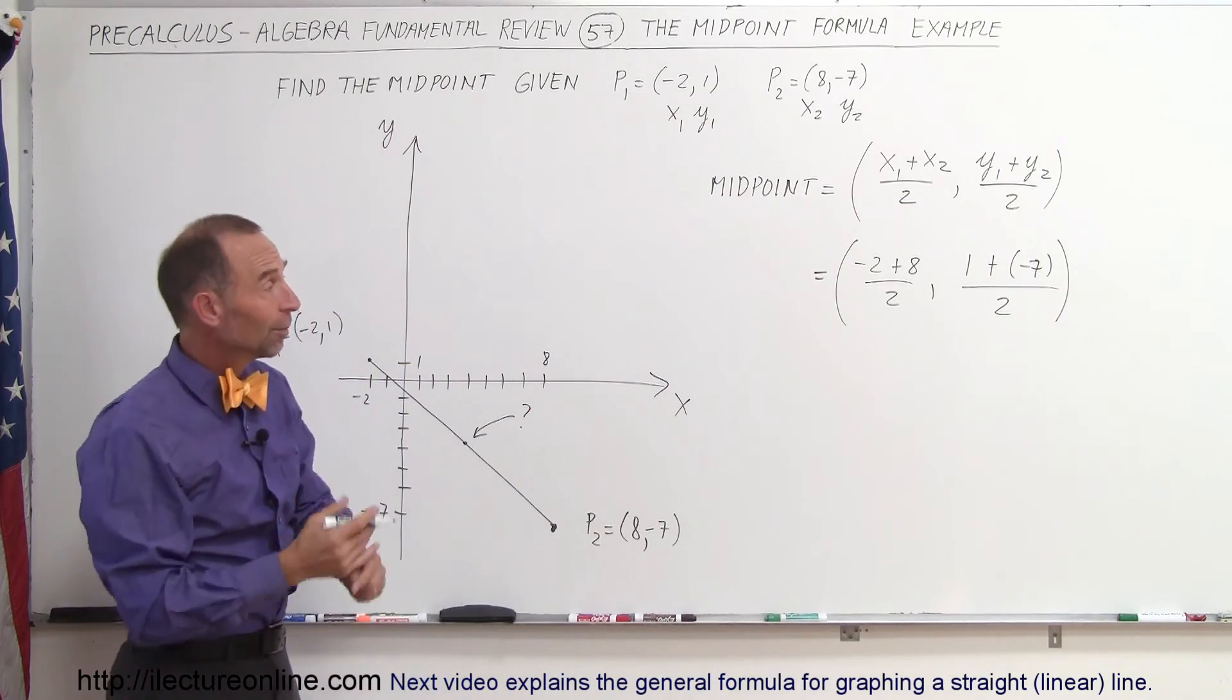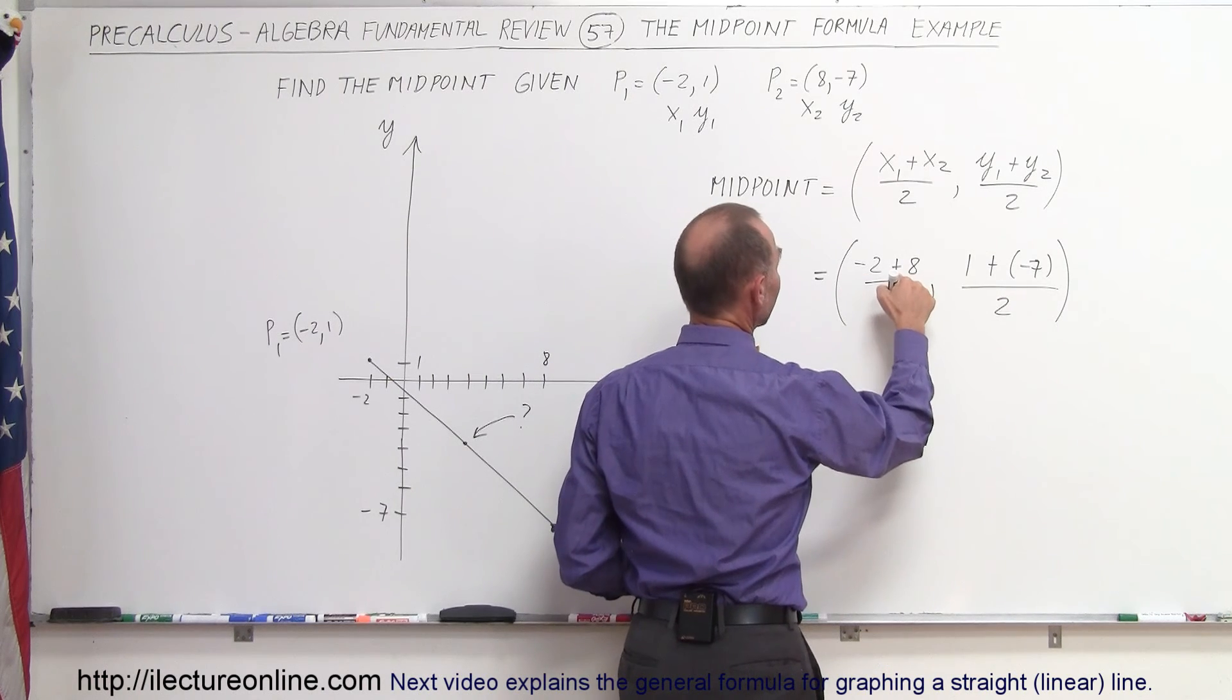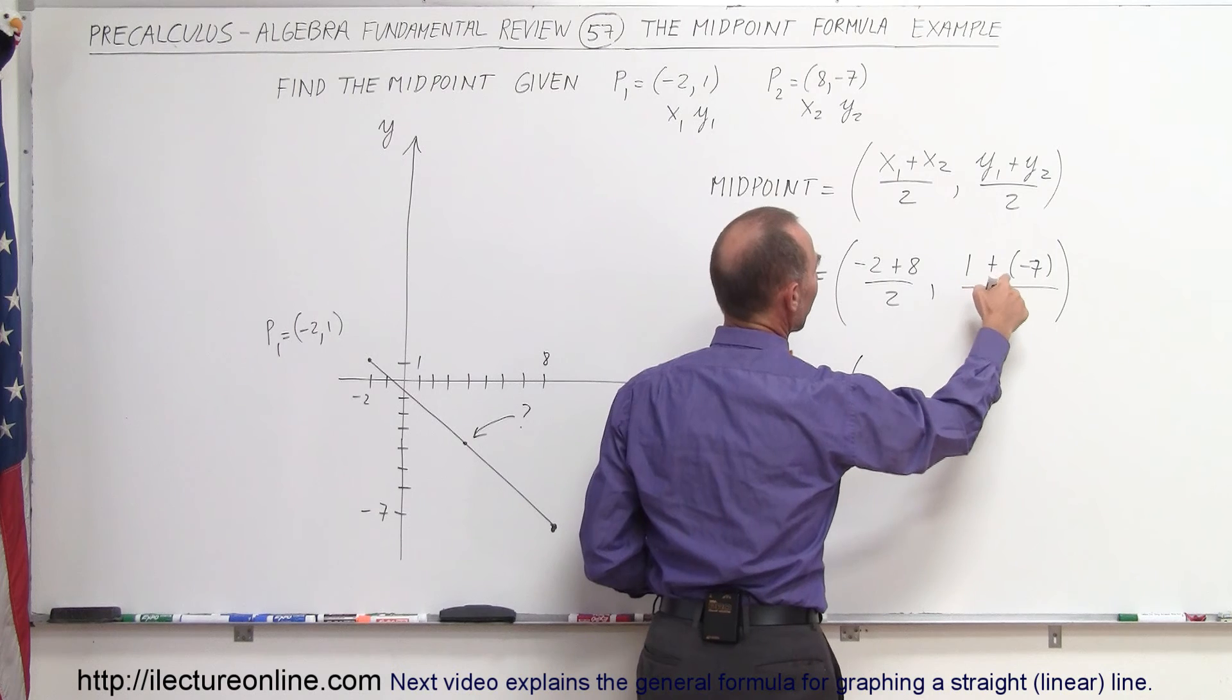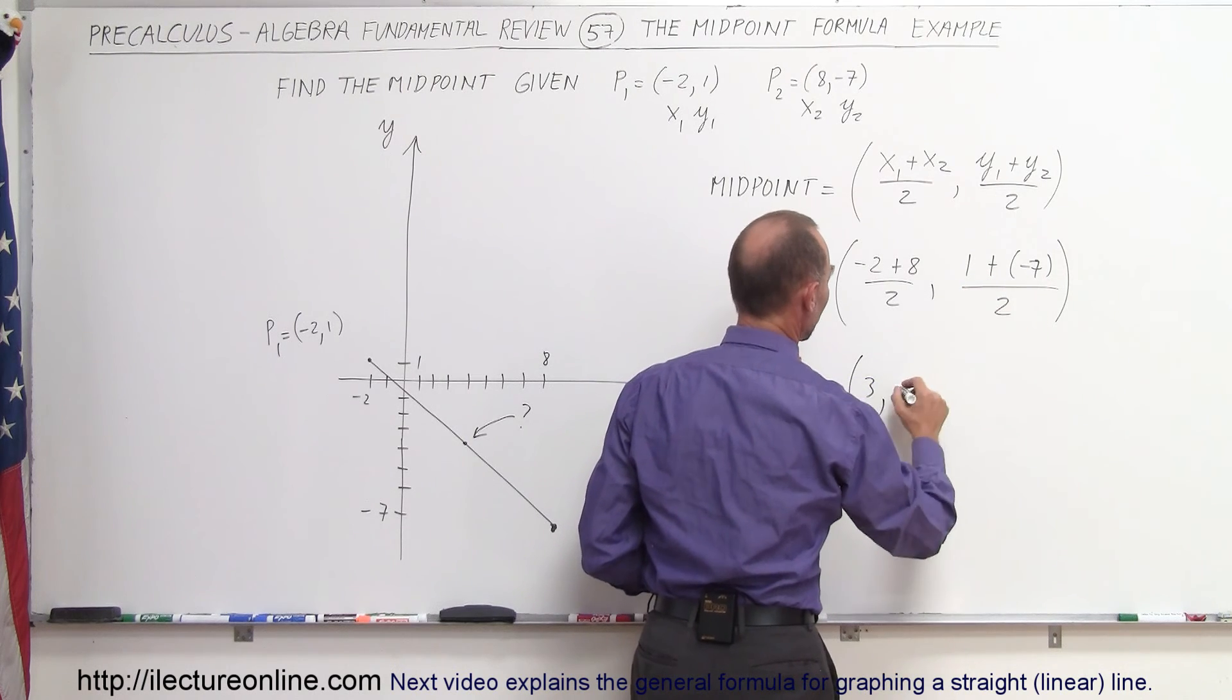Now we'll have to simplify that. So here we get minus 2 plus 8, that's plus 6 divided by 2, which is 3. And here we have 1 minus 7, that's minus 6 divided by 2, which is minus 3.